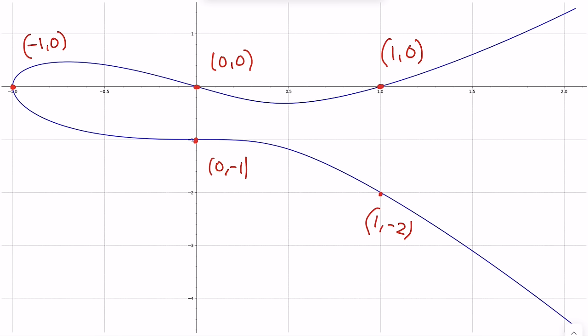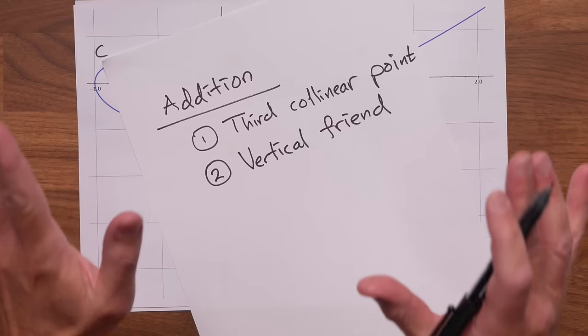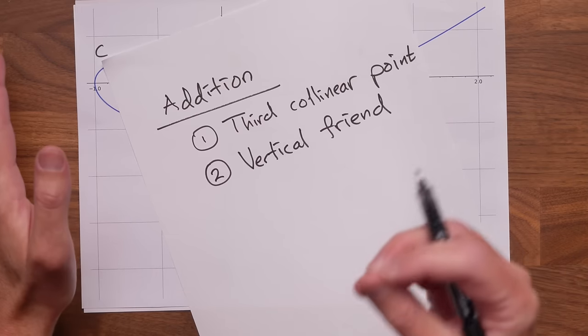Let's give them names. Say A, B, C, D and E. To compute addition, there are two steps. First, find the third collinear point and then find its vertical friend.